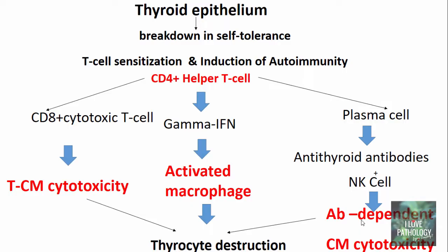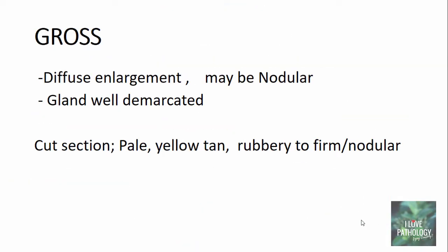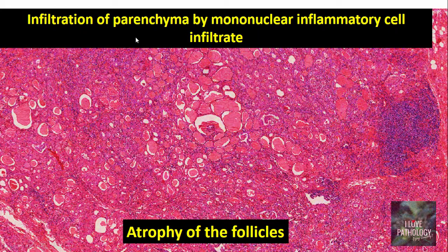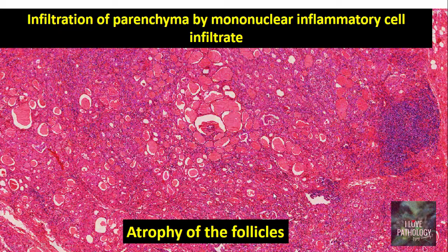Grossly, the thyroid gland shows diffuse enlargement, sometimes nodular. The gland is very well demarcated and on cut section it is pale, yellow-tan, rubbery to firm, or nodular. On microscopy, there is diffuse infiltration of the parenchyma of the thyroid by mononuclear inflammatory cells — lymphocytes and plasma cells. You can easily see lots of blue dots representing these mononuclear inflammatory infiltrates, and there is a varying degree of atrophy of thyroid follicles.